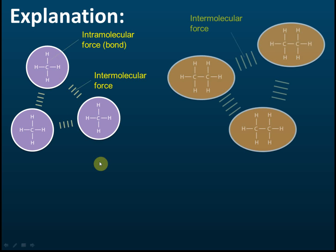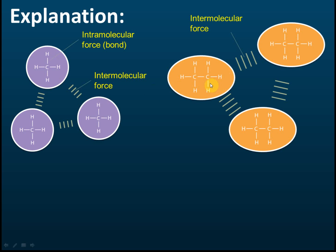Comparing an alkane with one carbon to one with two carbons, the second molecule is bigger. The strength of the intermolecular force is affected by the size of the molecule — the bigger the molecule, the stronger the force. The smaller molecule has a weaker force, while the bigger molecule has a stronger force, meaning more energy is needed to break it during boiling. This intermolecular force is called the van der Waals force.